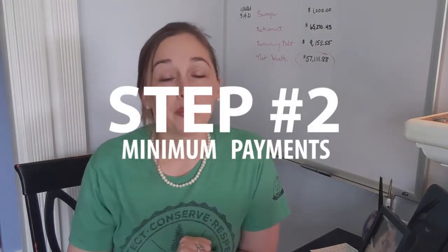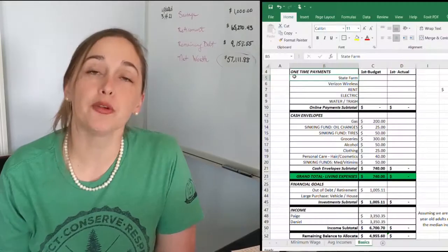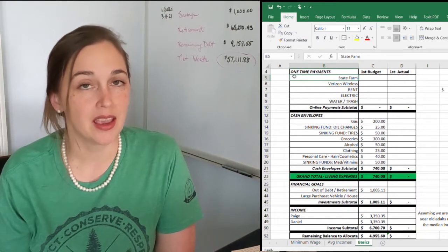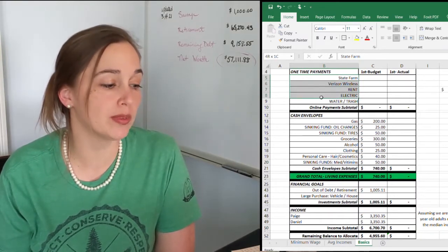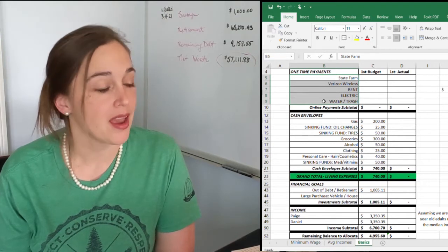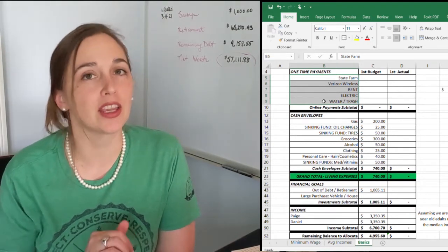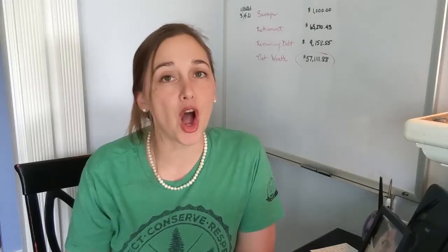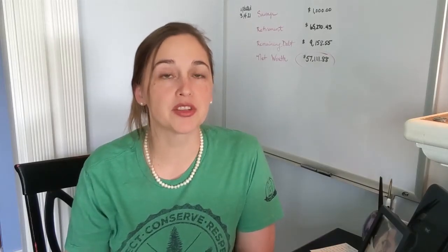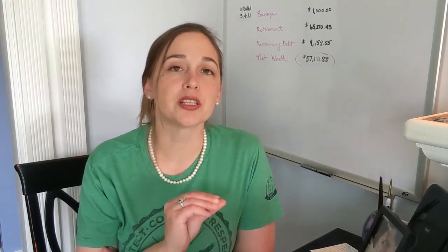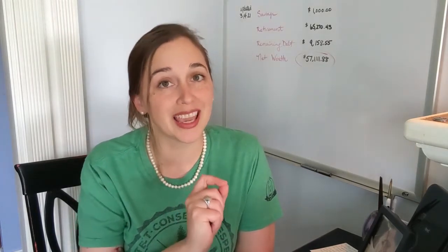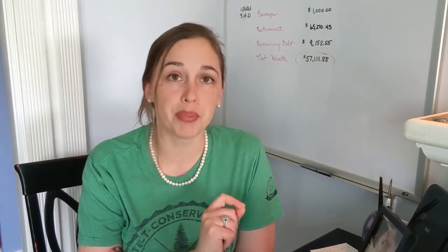Step two: put in your minimum payments. Your minimum payments may also be known as one-time payments — these are payments that you are generally paying only once a month. That is going to include things like your insurance, your cell phone bill, your rent, your electricity, but it can also include payments to debt servicing, so if there's a minimum payment on a credit card or minimum payment to a student loan. These are things that you now want to plug in to your budget spreadsheet.